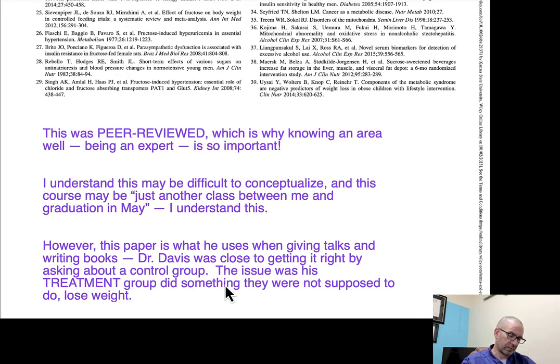The issue was, his treatment group did something they were not supposed to do, and that's they lost weight. They ate fewer calories than they were eating. Active weight loss tends to change biomarkers. The other issue here is, this is kind of what the Twinkie diet showed, is you can still eat sugar and improve metabolism. These kids still ate sugar, and they improved their metabolic profile, and they lost weight. Still eating sugar.